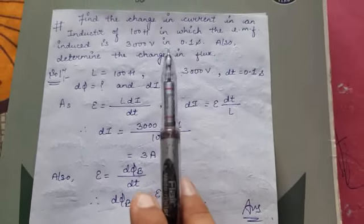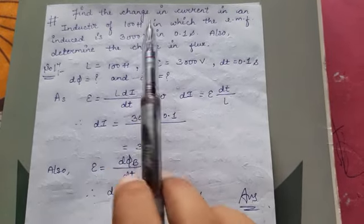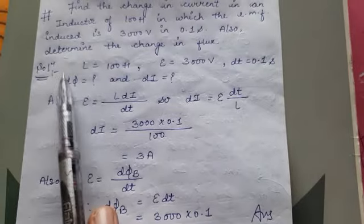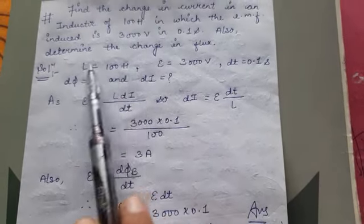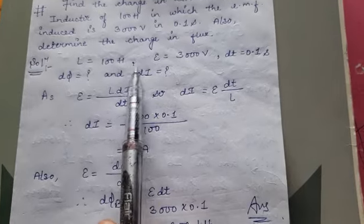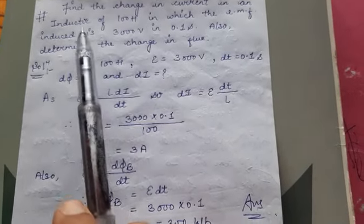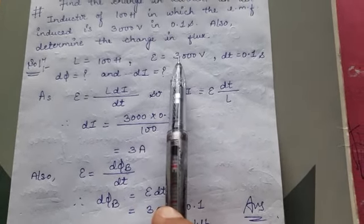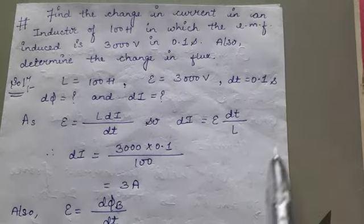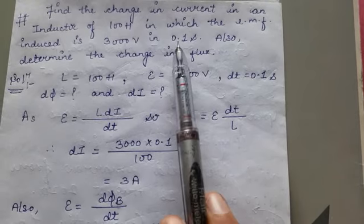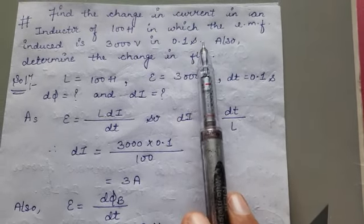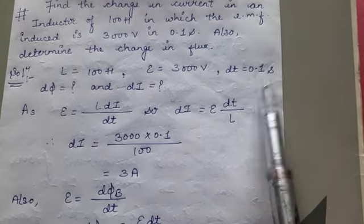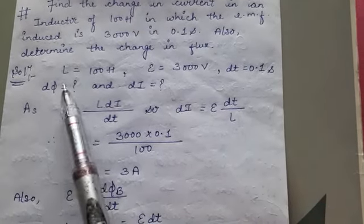So given to us, the inductance which we denote as L is 100 henry. After that, induced EMF which we denote as epsilon is 3000 volt. And the time given is 0.1 second.